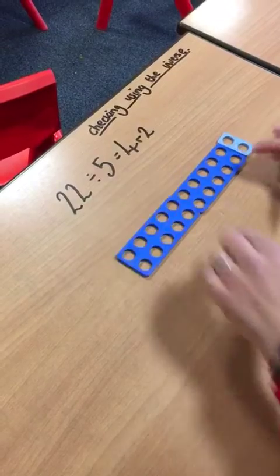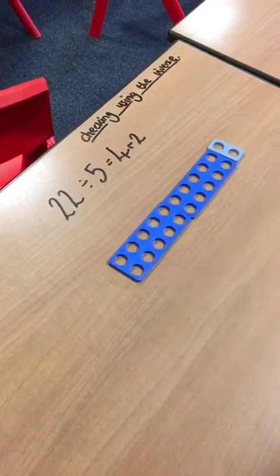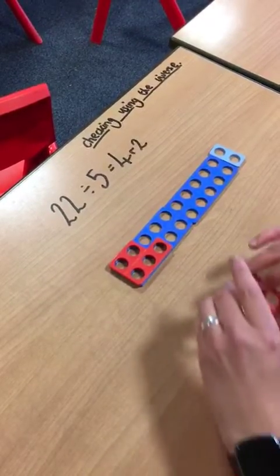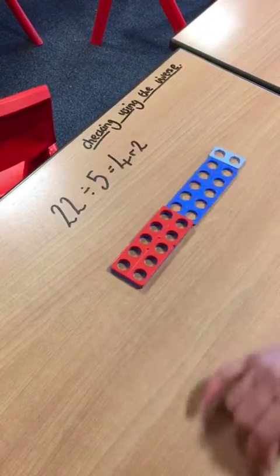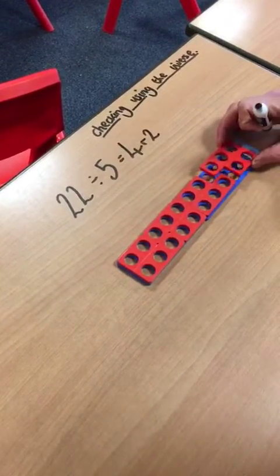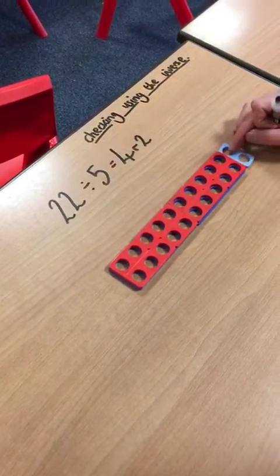Now I'm dividing it by 5. I want to see how many 5s fit on top of the 22 equally. So there is 1 group of 5, 2 groups of 5, 3 groups of 5, and 4 groups of 5 with 2 left over.